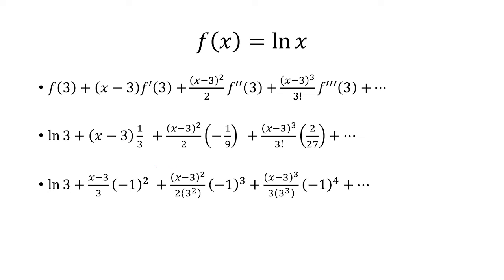One thing to note here is the alternating signs. Every other term is going to be negative outside of the ln of 3. So we need to have negative 1 raised to an exponent to make it positive for the first term, negative for the second, positive for the third, etc. The other thing to notice is that the exponents in the denominator are increasing: first it's 3, 3 squared, 3 cubed.